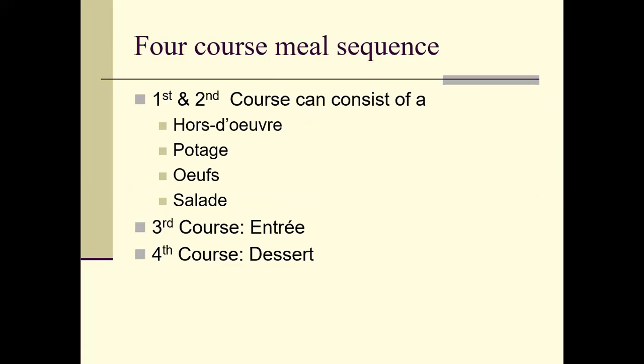Now for the four-course meal sequence, your first and second courses can consist of any of the following: your first course could be an hors d'oeuvre, then you could have a potage — a soup course — or you could have an oeuf, which is an egg course, and then your salad course. You get to decide which two you want to serve as the first and second course. You could do hors d'oeuvre then salad, then entrée, then dessert.